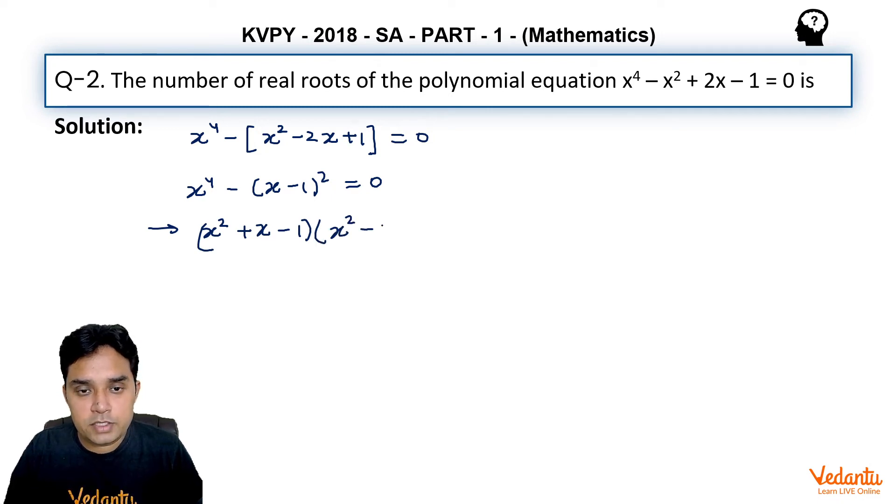First one, for the first one we are having discriminant D1 to be positive, we can check. Whereas for the second one that discriminant is negative. So we can only have two distinct roots here, two distinct and real roots here.